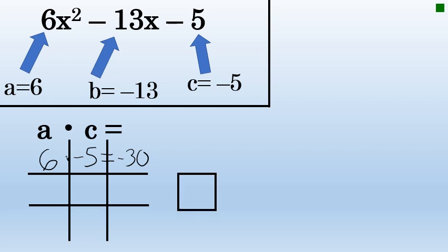Next, I'm going to put a box beside the tic-tac-toe board, and in that box is going to be the value of b, negative 13 in this case. Now we are going to fill in the remaining boxes in the last column of the tic-tac-toe board. These two values will have a product of negative 30 and a sum of negative 13. We'll find these numbers by thinking about all of the factors of negative 30, until we come up with a combination that also adds up to negative 13.